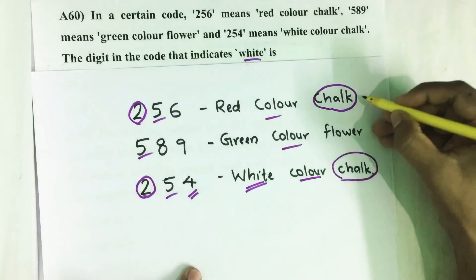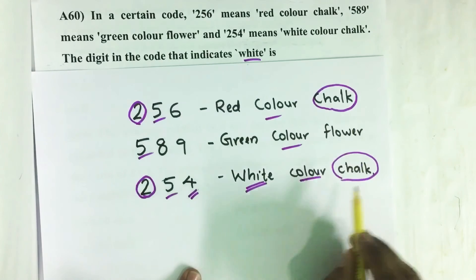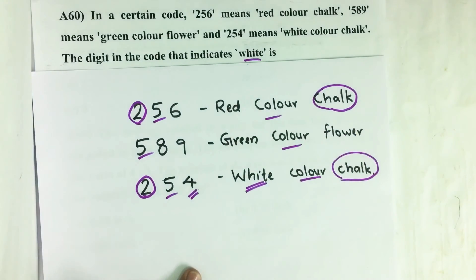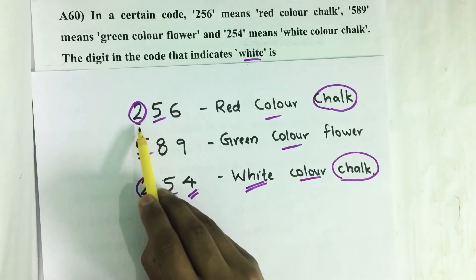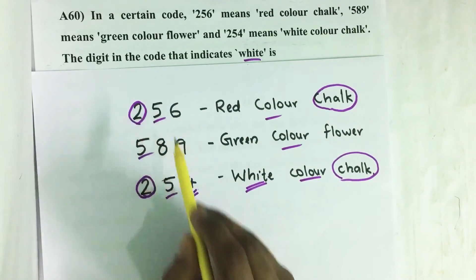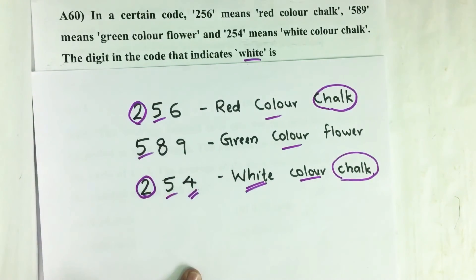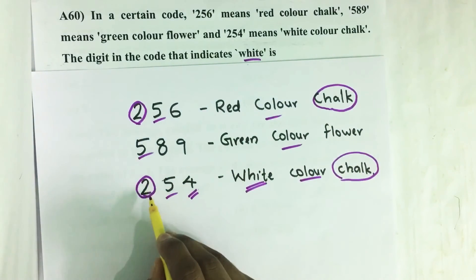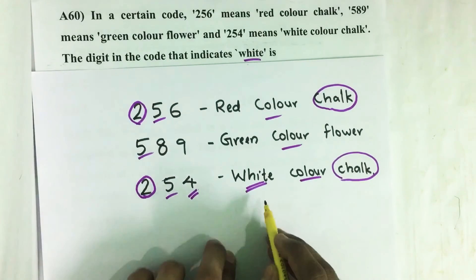Now see the first and third sentences: red color chalk, white color chalk. In both of these, 'chalk' is common. And while seeing corresponding codes 256, 254, 2 is common. In this, 5 is already coded with color, then 2 is common, and 'chalk' is coded with 2.